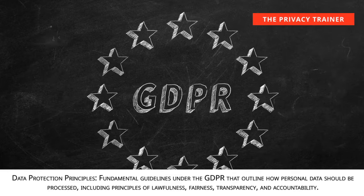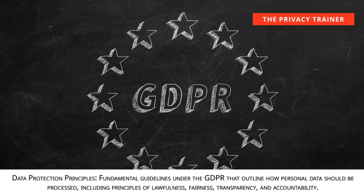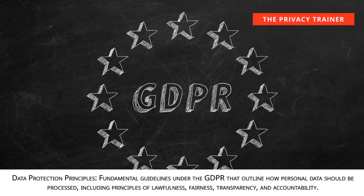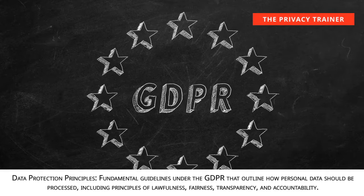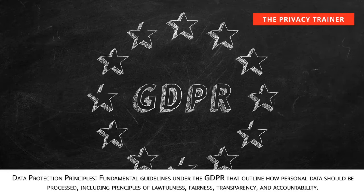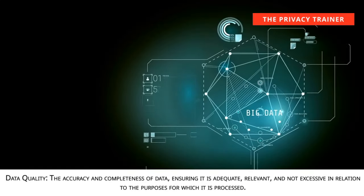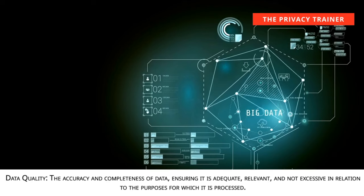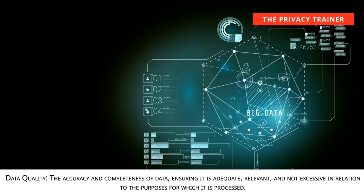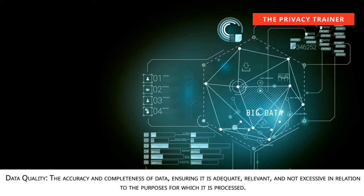Data protection principles. Fundamental guidelines under the GDPR that outline how personal data should be processed, including principles of lawfulness, fairness, transparency, and accountability. Data quality. The accuracy and completeness of data, ensuring it is adequate, relevant, and not excessive in relation to the purposes for which it is processed.